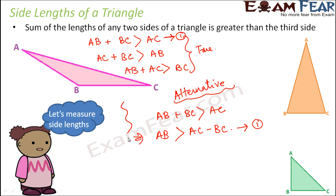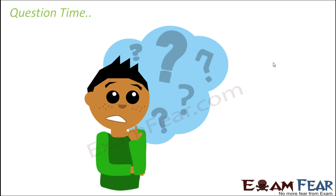Do not focus too much on the alternative expression as it might confuse you. The key point is simply that the sum of two sides is greater than the third side, and indirectly that means one side is always greater than the difference between the other two sides. I hope this is clear — for any triangle, the sum of the two sides is greater than the third side.